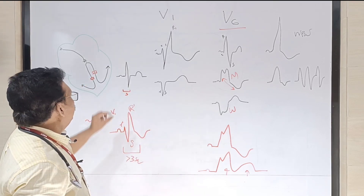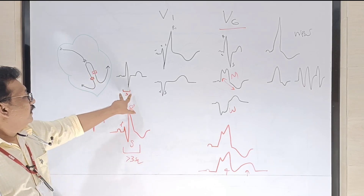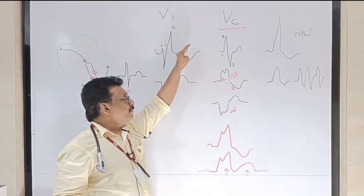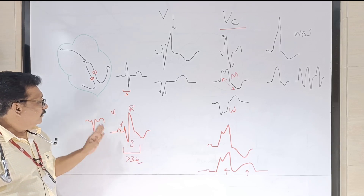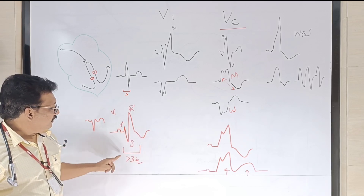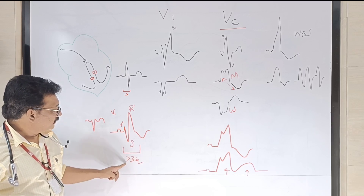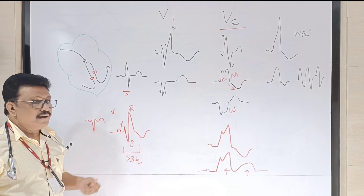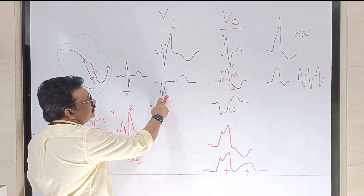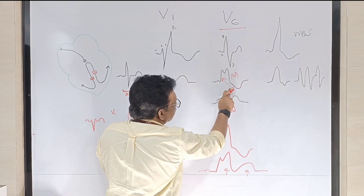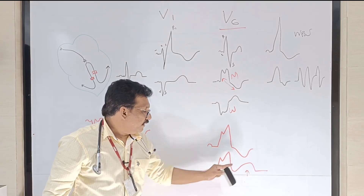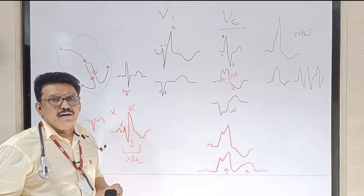To summarize: the QRS complex originates from ventricular activation and is normally less than three small squares. If it is wide, the two important differential diagnoses are right bundle branch block and left bundle branch block. In RBBB, V1 shows an RSR' pattern followed by ST depression and T-wave inversion. In complete bundle branch block, QRS duration is more than three small squares; if narrower, it is called incomplete RBBB. In LBBB, V6 shows an M pattern with ST depression and T-wave inversion — this is the discordant pattern.